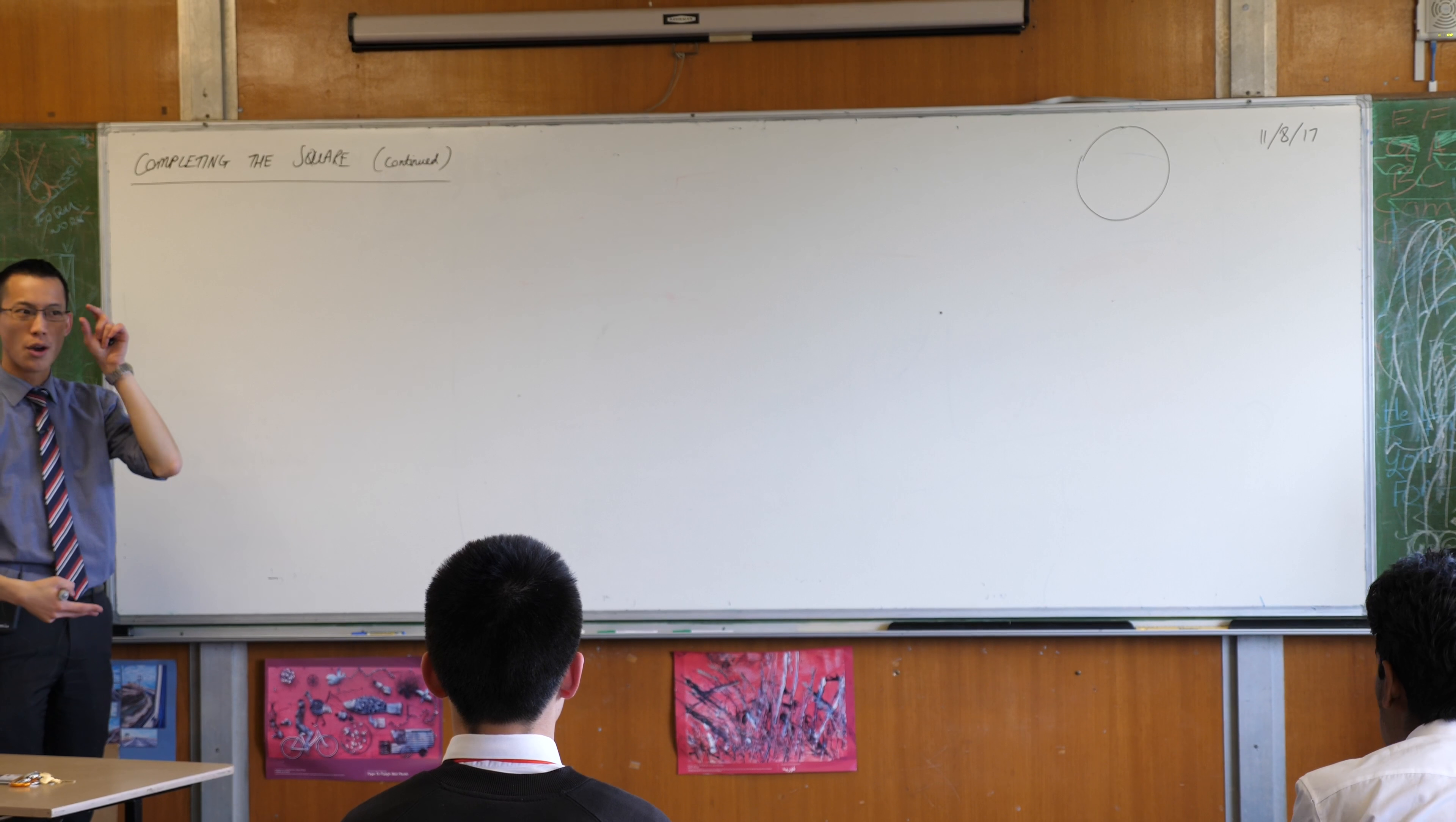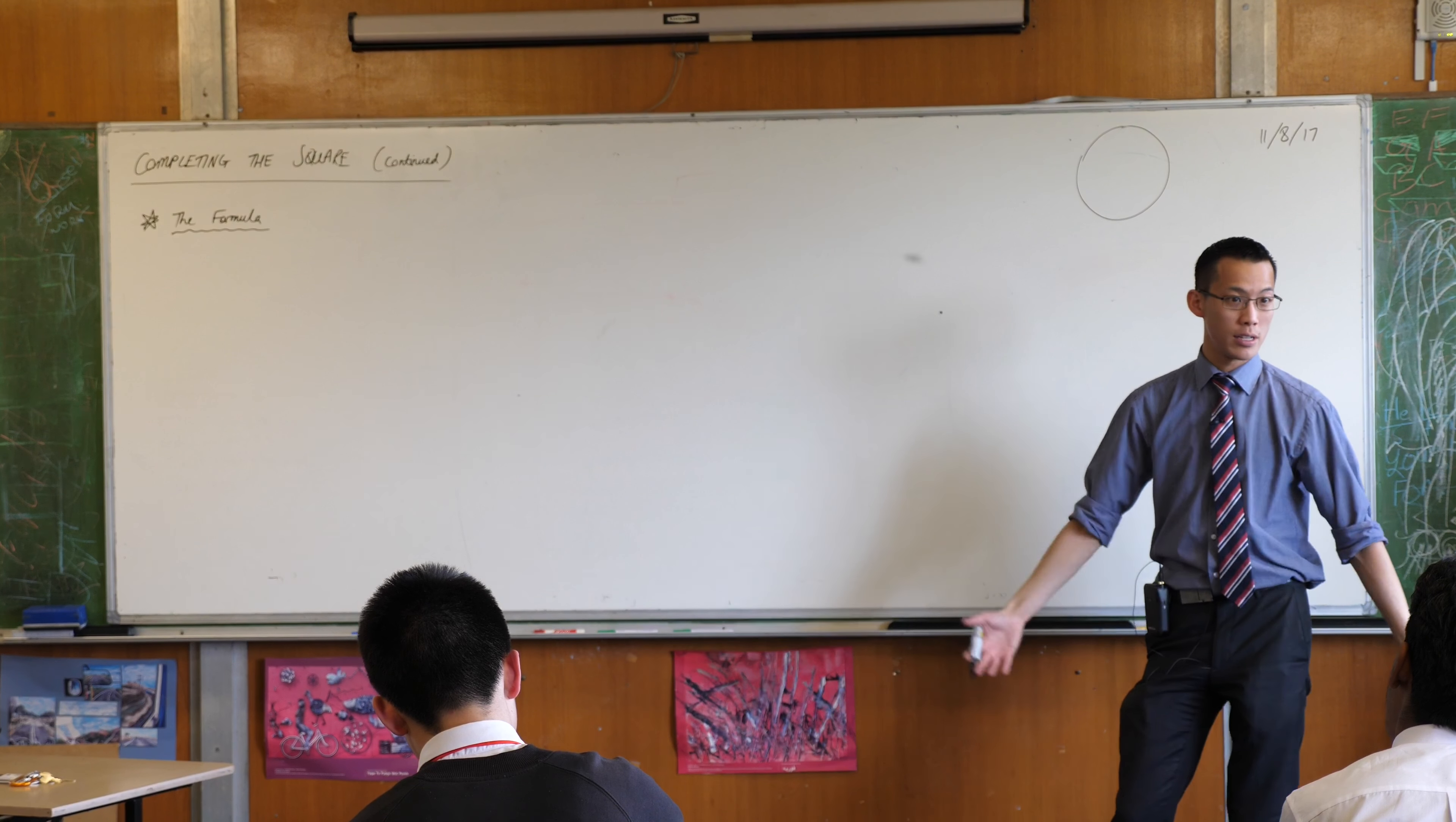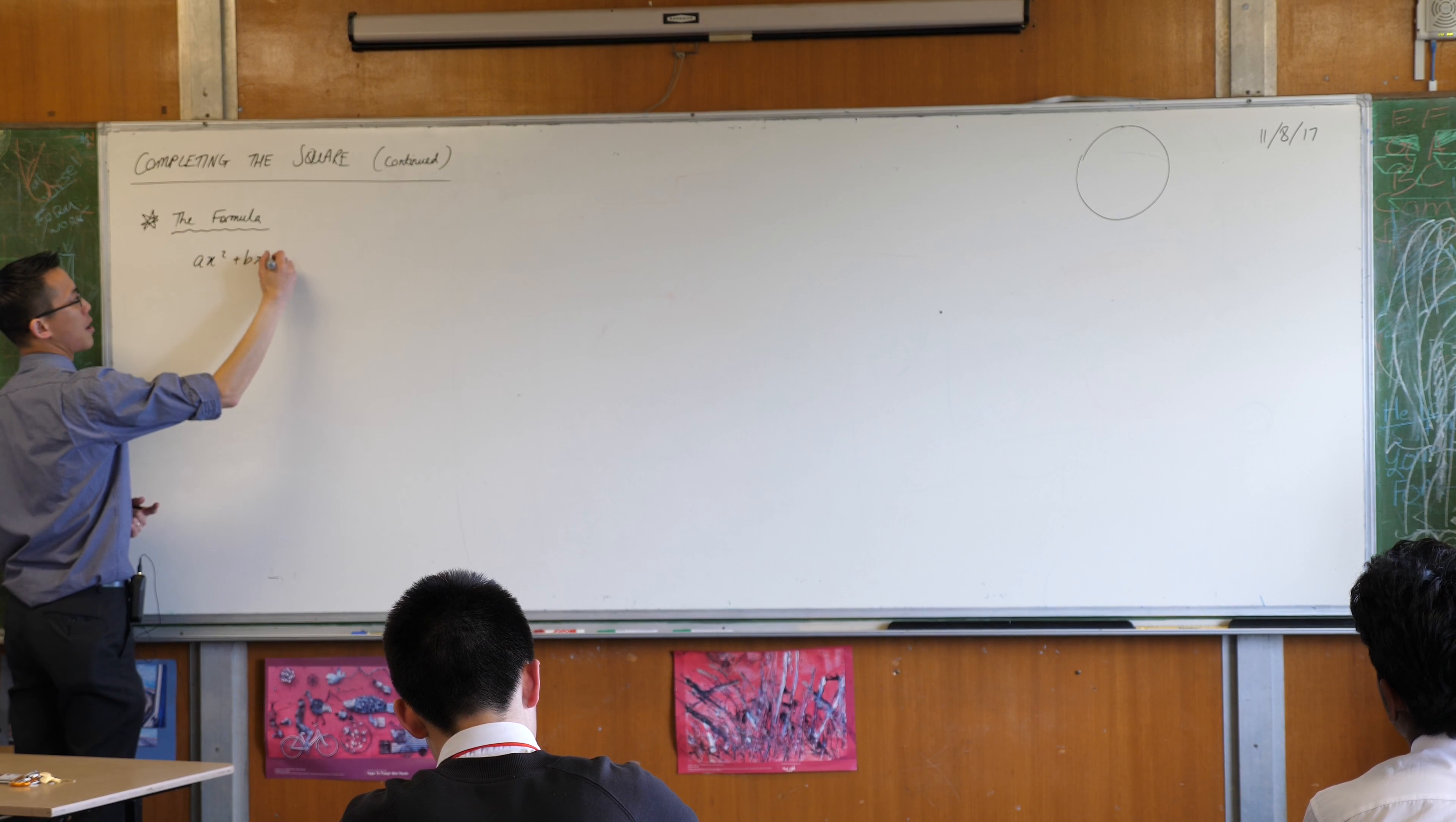So we're going to look at two more things that you can do with completing the square. First, the formula. Now we know the formula. The formula for solving a quadratic equation is x equals minus b plus or minus yada yada yada. And it comes from completing the square. Now it wouldn't be very likely that you'd be actually asked to derive the quadratic formula. However, what would be likely is you're asked to use all the same skills that deriving it would. So let's quickly revise this because we've seen this before.